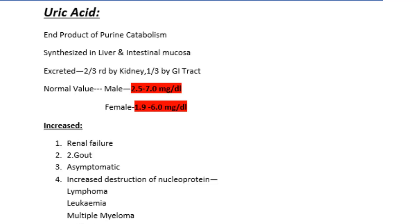It is excreted two-thirds via the kidney and one-third via the GI tract. The normal value in males is 2.5 to 7 mg per dl, and in females it is 1.9 to 6 mg per dl.